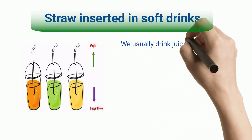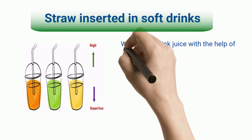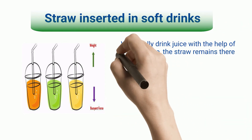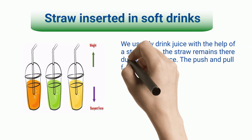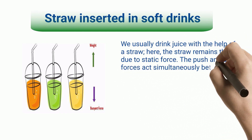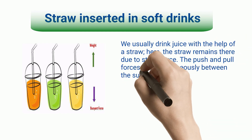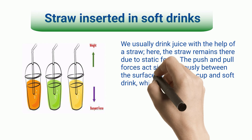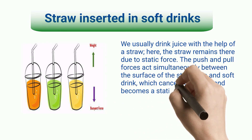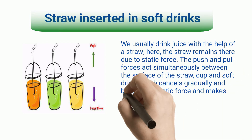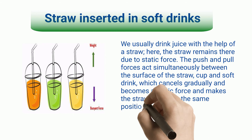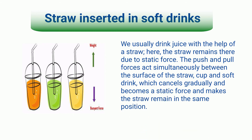We usually drink juice with the help of a straw. The straw remains in place due to static force. The push and pull forces act simultaneously between the surface of the straw, cup, and soft drink, which cancel gradually and become a static force, making the straw remain in the same position.